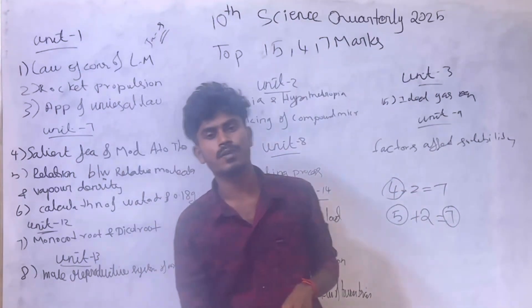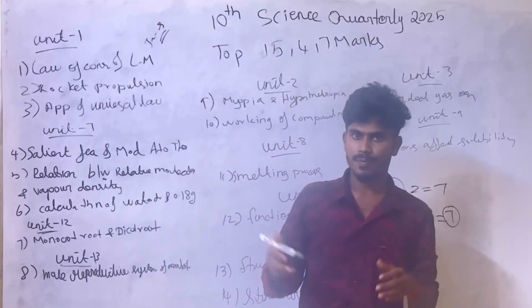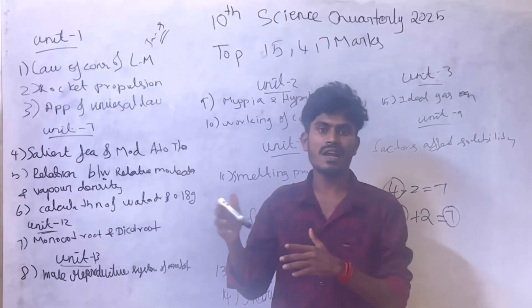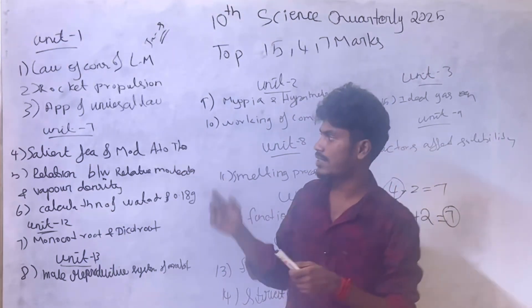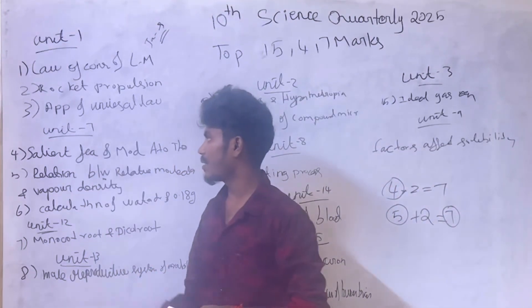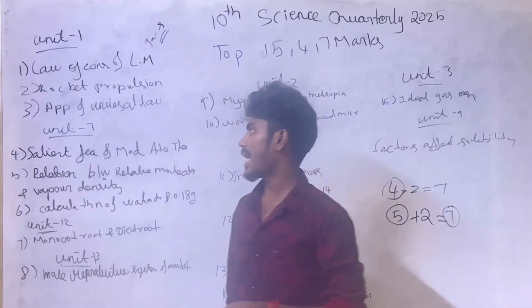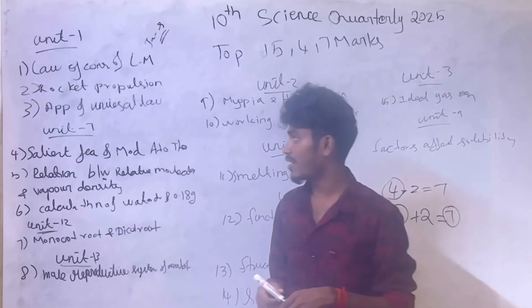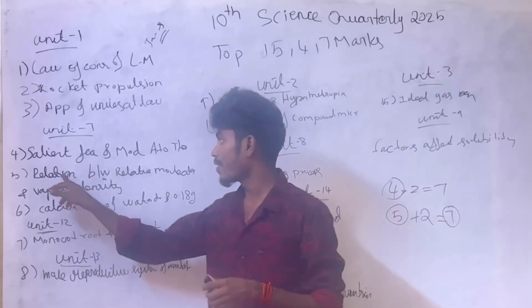Third question: applications of the universal law of gravitation — very important. Unit 7: salient features of modern atomic theory — very important number question.